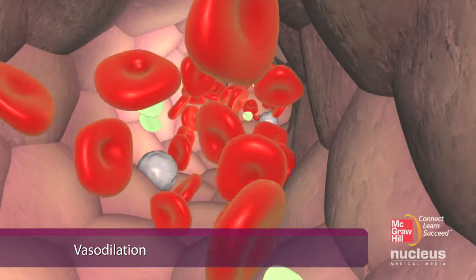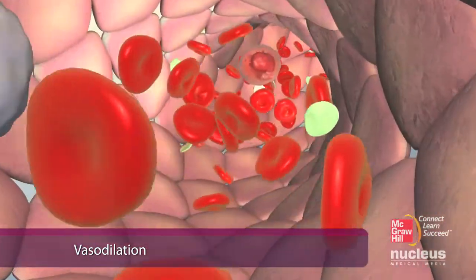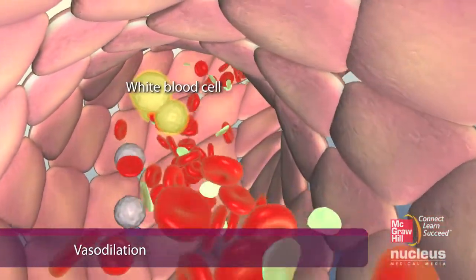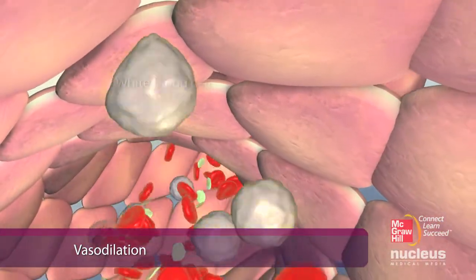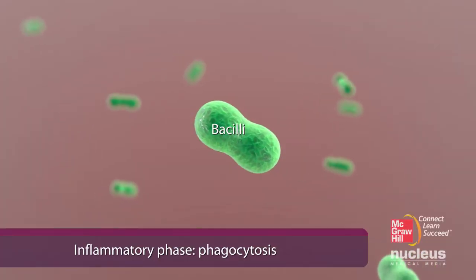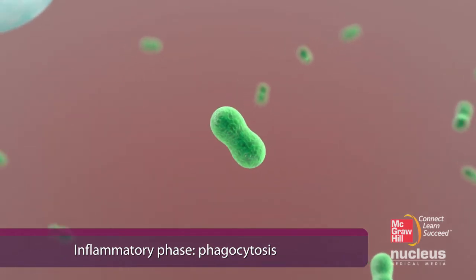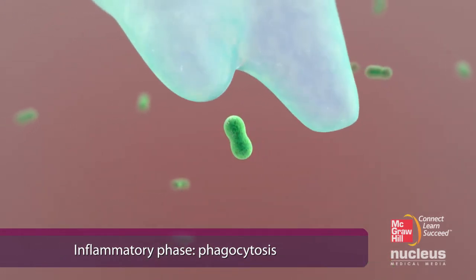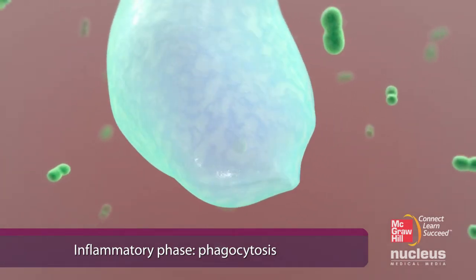After the clot forms, the blood vessels vasodilate and become more porous to allow white blood cells to leave the blood vessel and populate at the site of injury. During this process, called phagocytosis, white blood cells eat debris and kill bacteria, reducing the risk of infection.